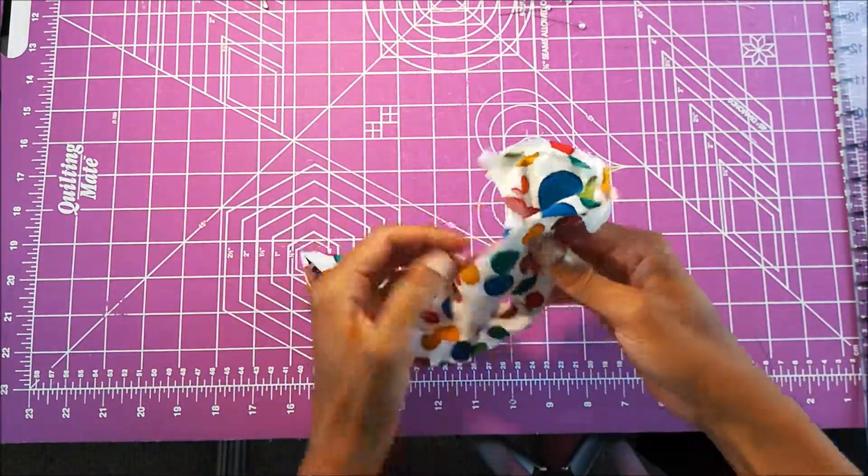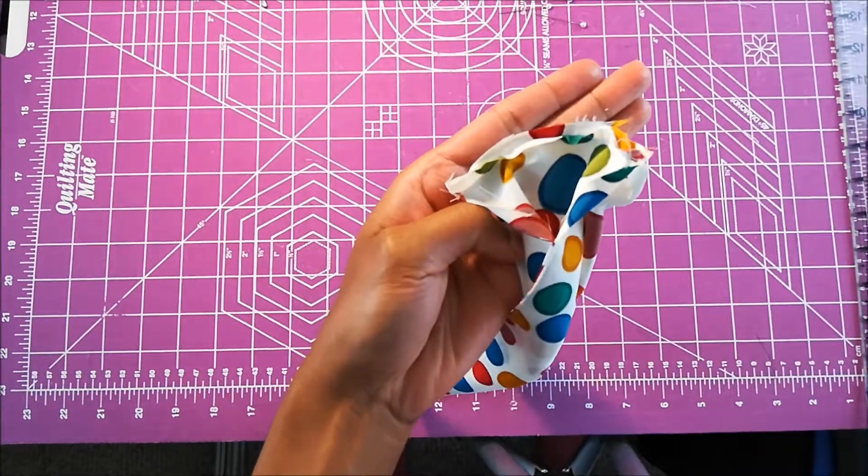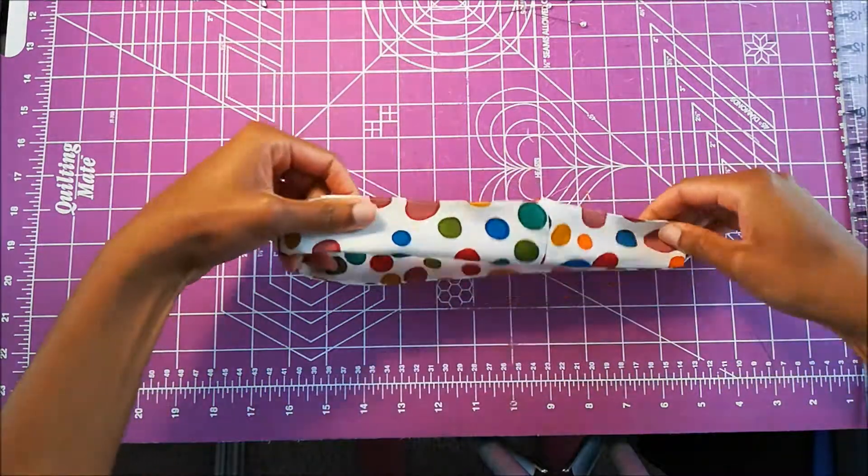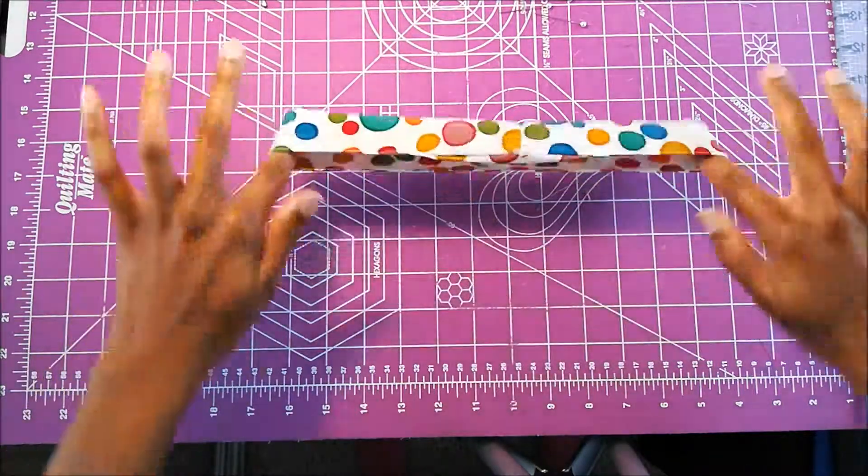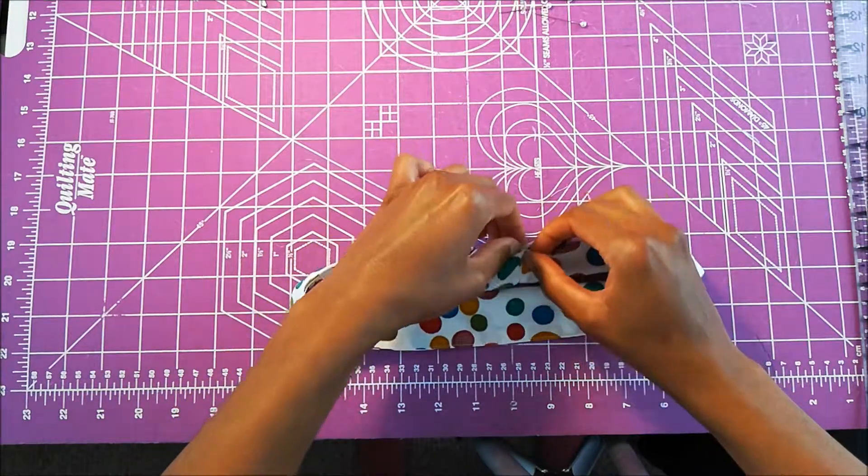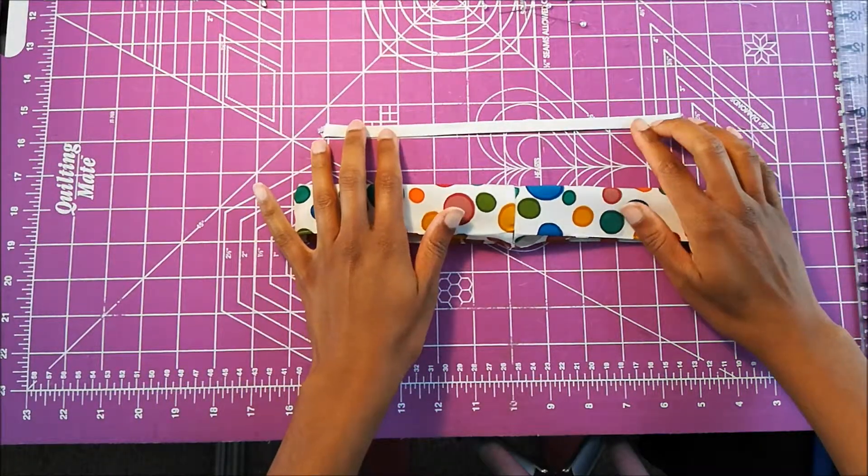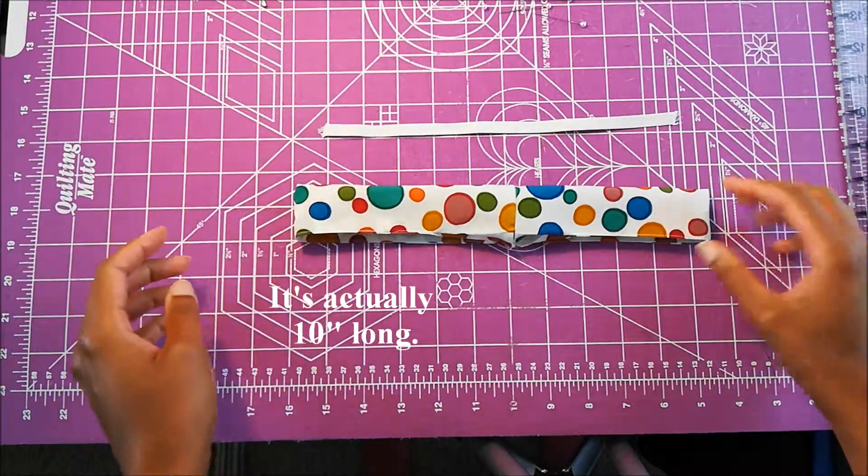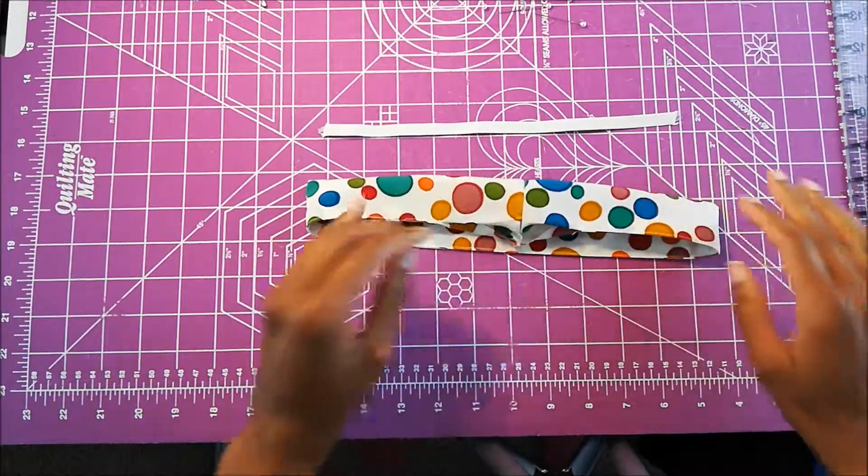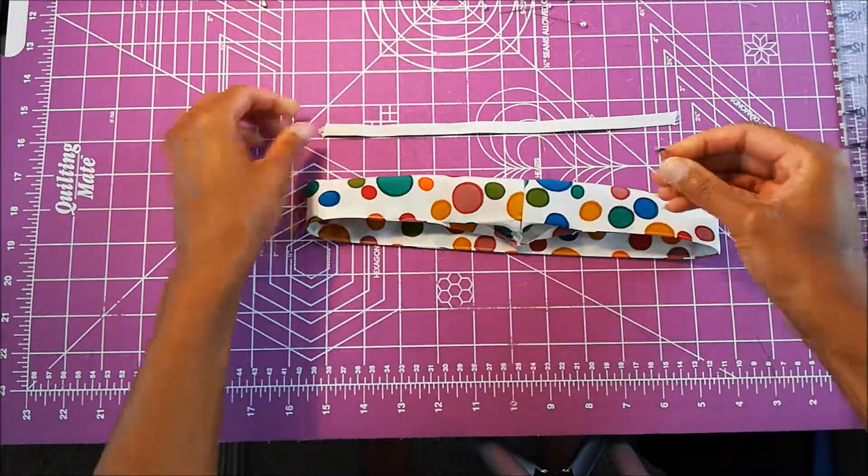As you can see I've stitched this opening closed and I've gone ahead and pressed open the seam so now if you just pull it apart you can see that I've got a closed tube with a little opening right here and now what I'm going to do is I'm going to insert my elastic. I'm using I think this is quarter inch elastic and it's about nine inches long and I'm going to go ahead and feed that through my casing and then stitch that closed stitch the elastic closed here we go.